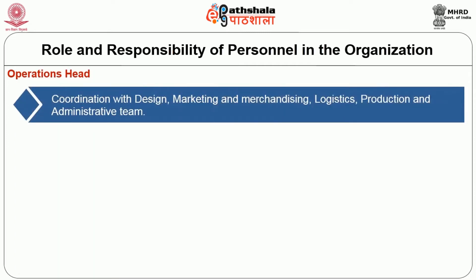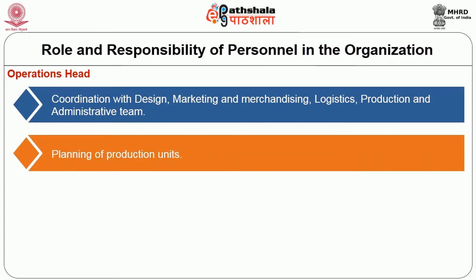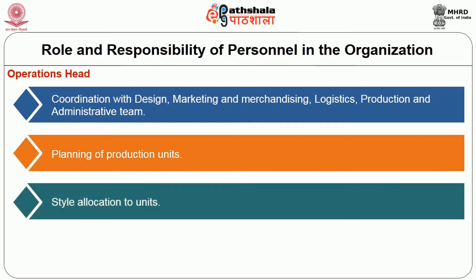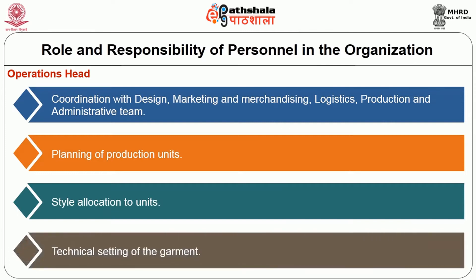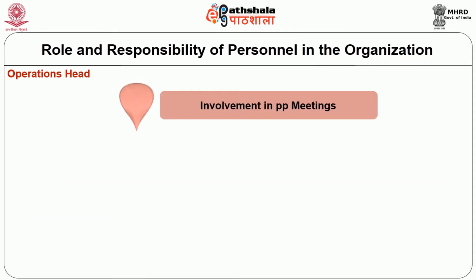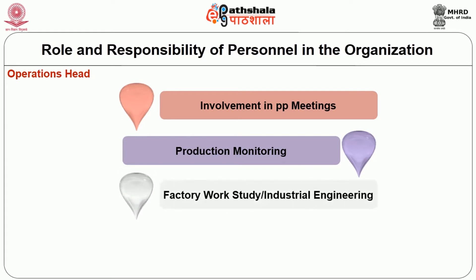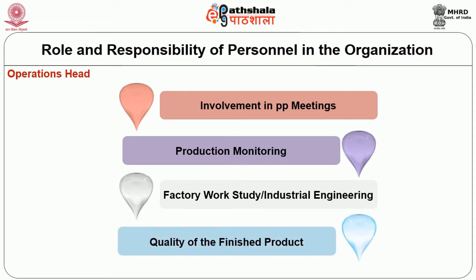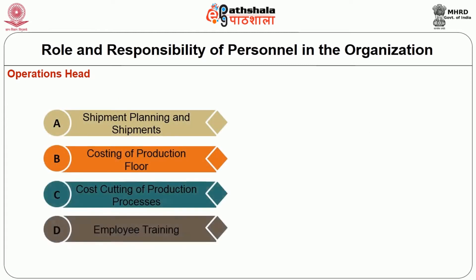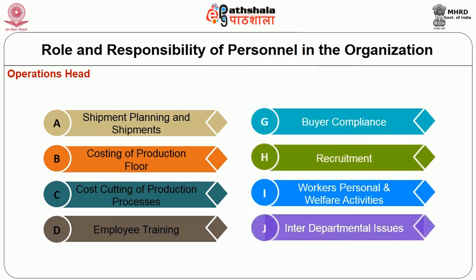Operations head. Responsibilities include coordination with design, marketing, merchandising, logistics, production and administrative teams; planning of production units; style allocation to units; technical setting of the garment; involvement in pre-production meetings; production monitoring; factory work study and industrial engineering; quality of the finished product; shipment planning and shipments; costing of the production floor; cost cutting of the production process; employee training; buyer compliance; recruitment; workers' personal and welfare activities; and interdepartmental issues.